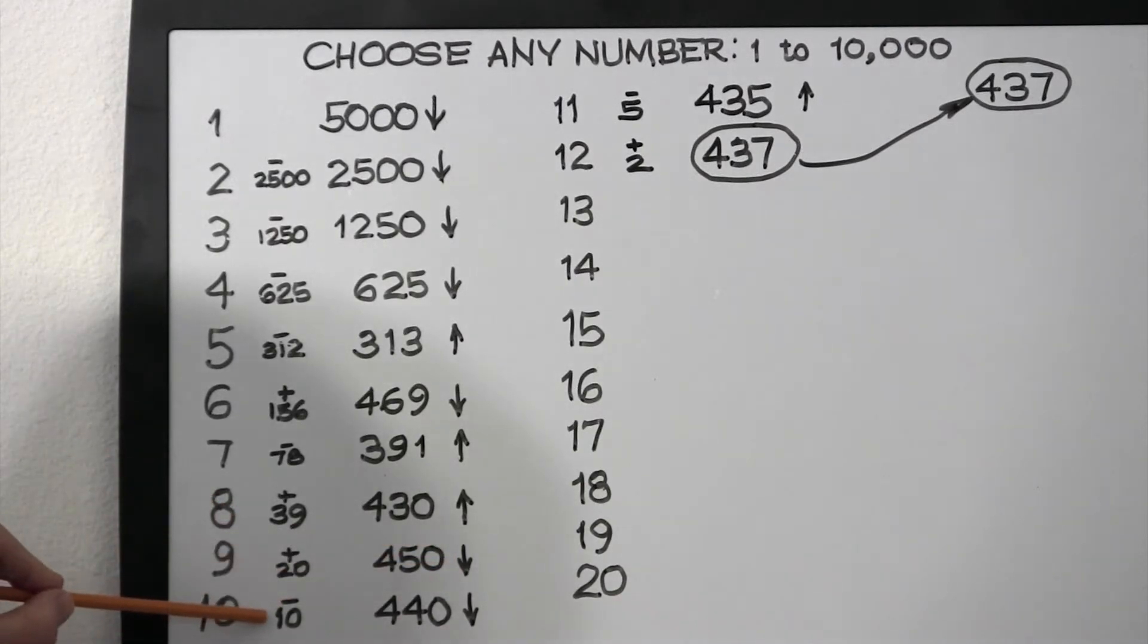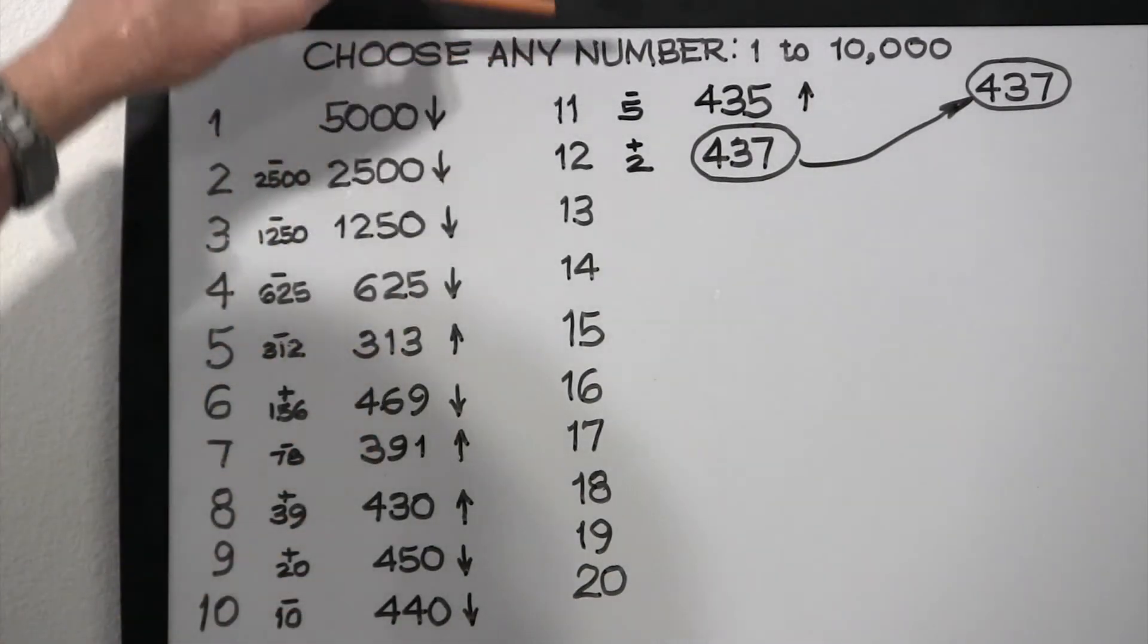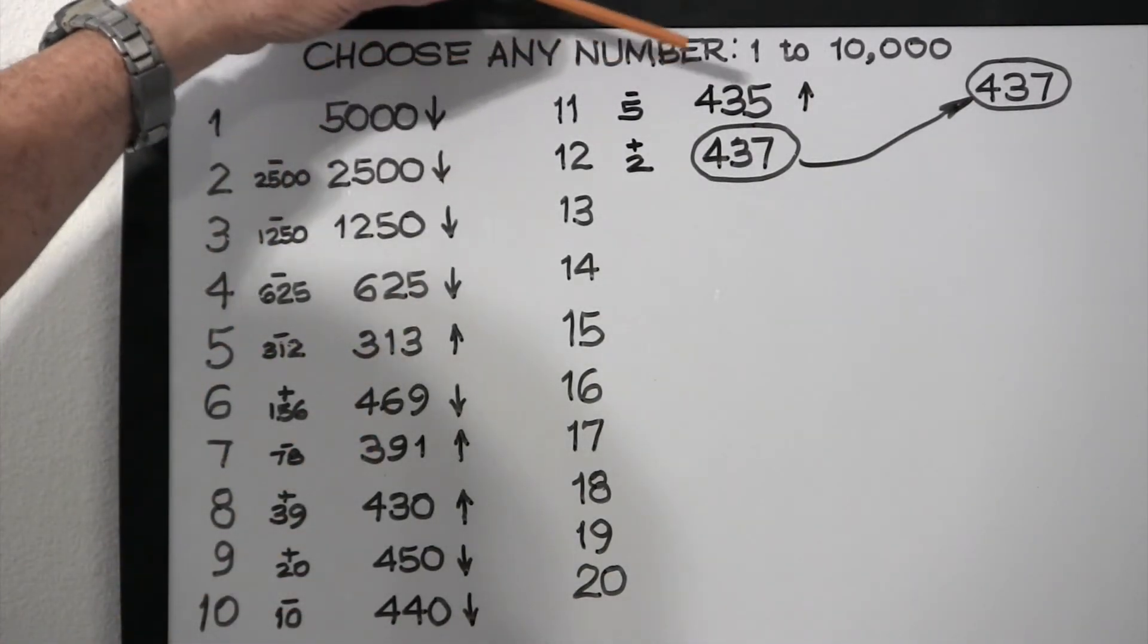So half of 20 is 10, and we're going down, so we subtract the 10, which gives us 440. We're told, no, that's still too high, you have to go down.